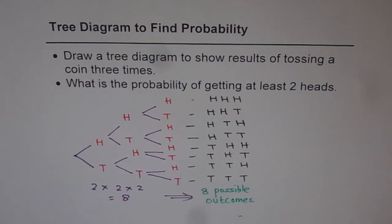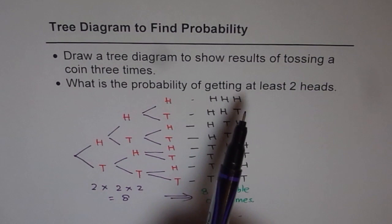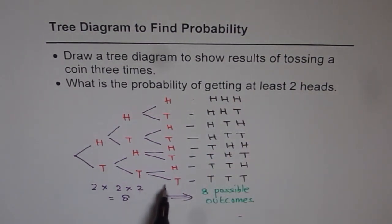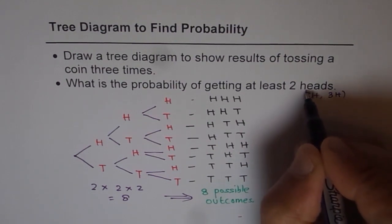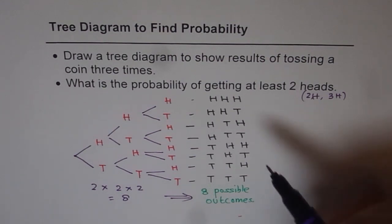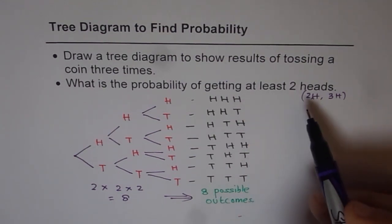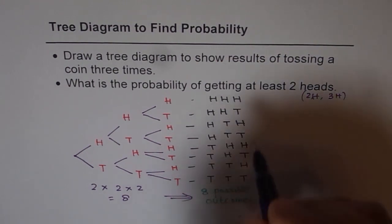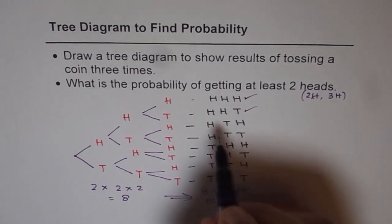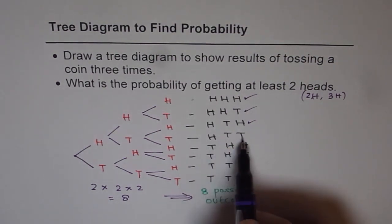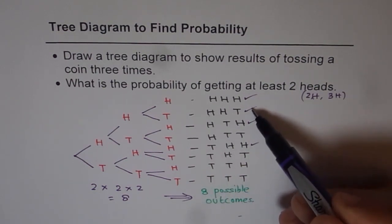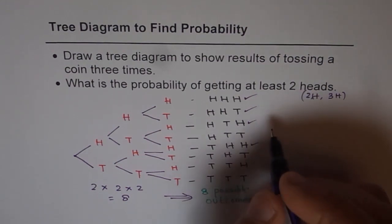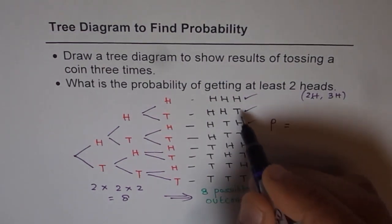So we have the tree diagram representing tossing a coin three times. Now the second part of the question is: what is the probability of getting at least two heads? If you are tossing it three times, at most you can get three heads — so that means either two heads or three heads. Let's count how many of the possible outcomes have at least two heads. HHH: three heads — that works. HHT: two heads — that works. HTH: two heads — this also works. HTT has only one head, so that doesn't work.